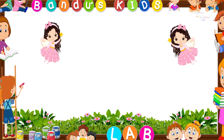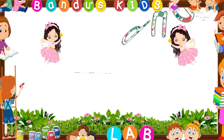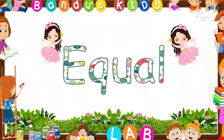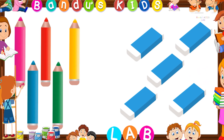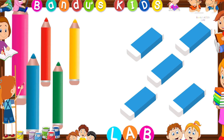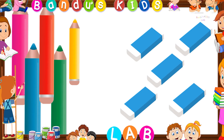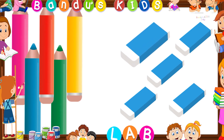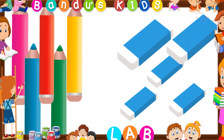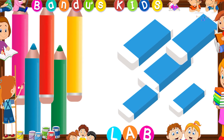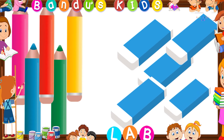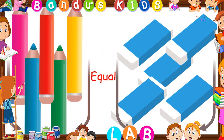Kids, now let's learn the concept of equal. Look at this picture. Here are a set of colors and a set of erasers. Let's count them: one, two, three, four, five — here are five colors. Now let's count the erasers: one, two, three, four, five — here are five erasers. The set of colors and the set of erasers are equal in number. That's why they are equal.